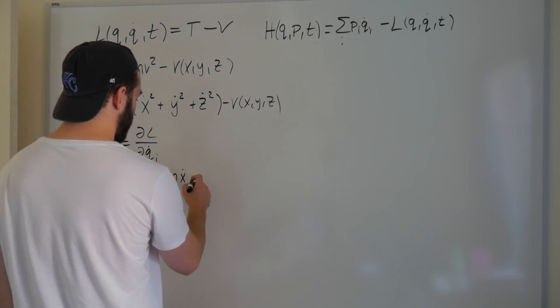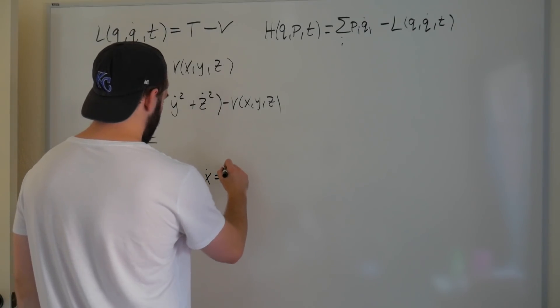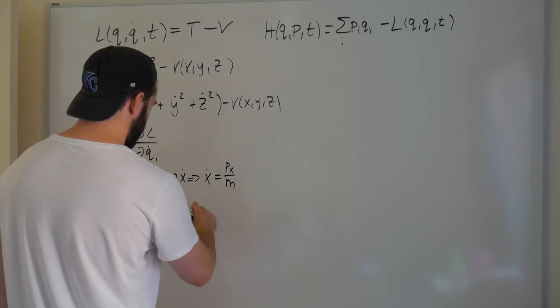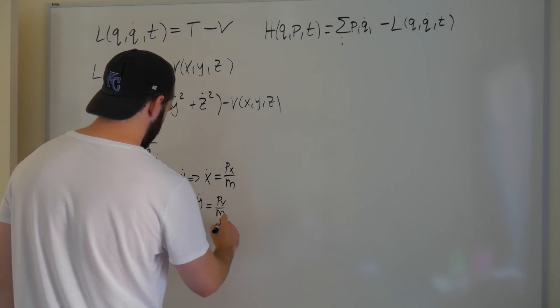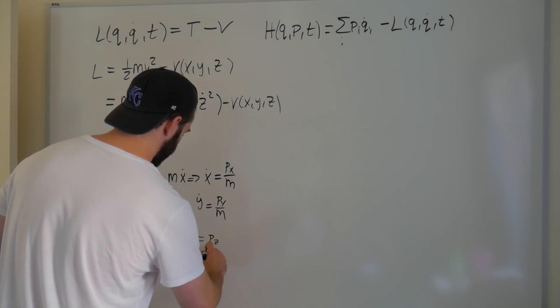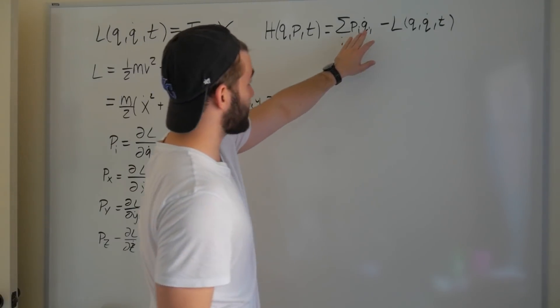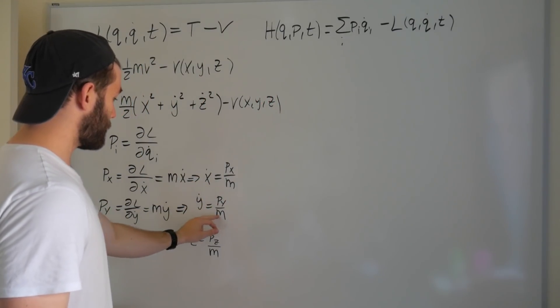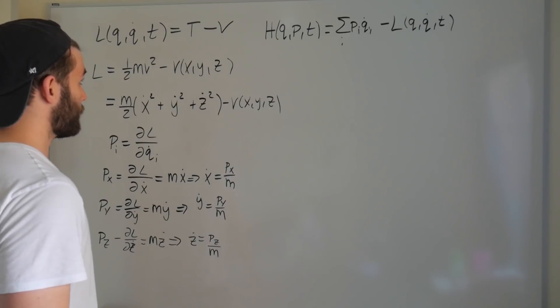What we can do here is we can solve for our q dots in terms of p. So if we do that, what we get is that x dot is equal to px over m. Similarly, y dot is equal to py over m. So now every time we see these dots in here, we can just substitute in our associated velocity in terms of the momentum. Now let's do that.